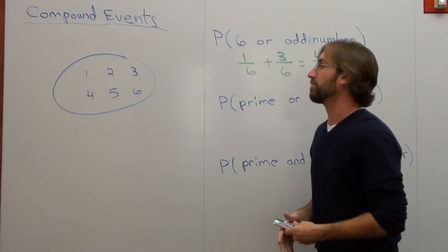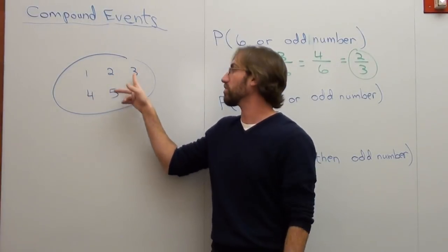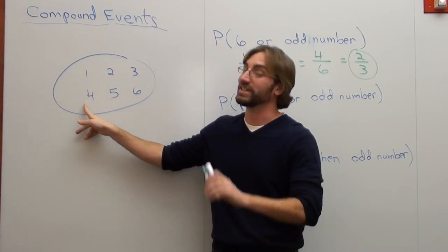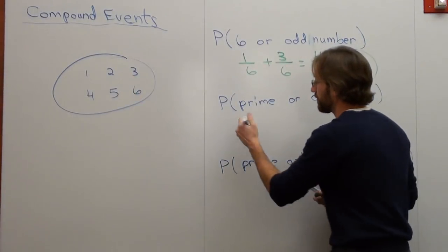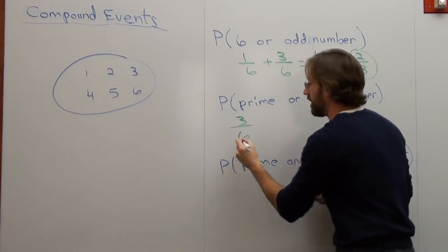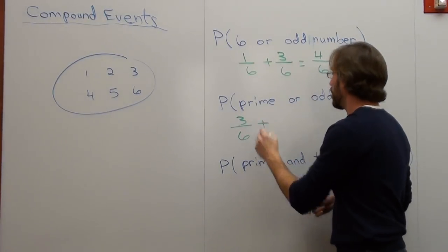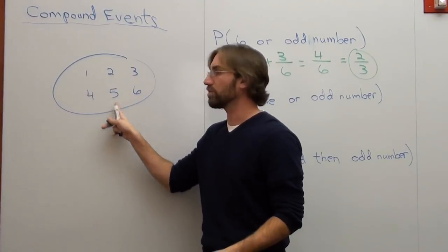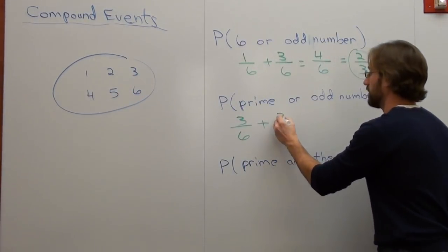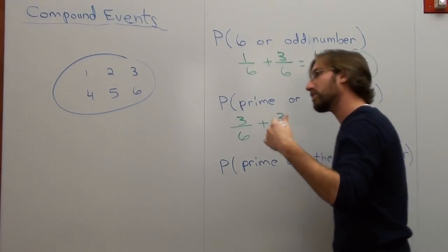So what's the probability of rolling a prime? Well, 2 is a prime number. 3 is a prime number because it can't be split. 4 is not. 5 is. So it's 3 out of 6. Now the word or means plus. What's the probability of rolling an odd number? 1, 2, 3. 3 out of 6. That is not correct.